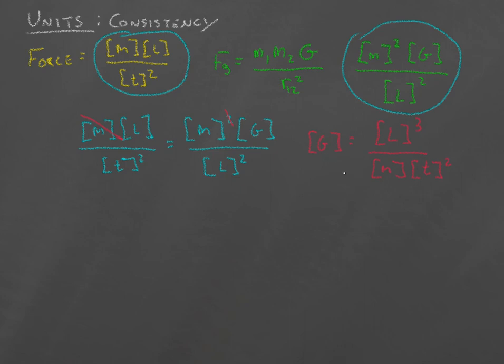So the units of Newton's constant are length cubed divided by mass times time squared. So we use this to take some unknown quantity in an equation and figure out what it represents physically, or at least what type of object it is.